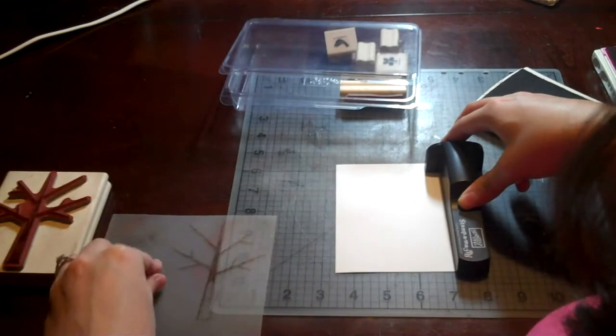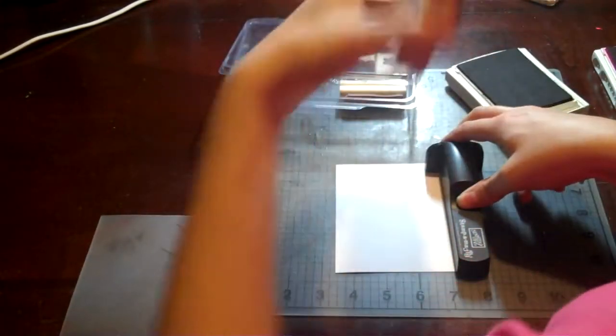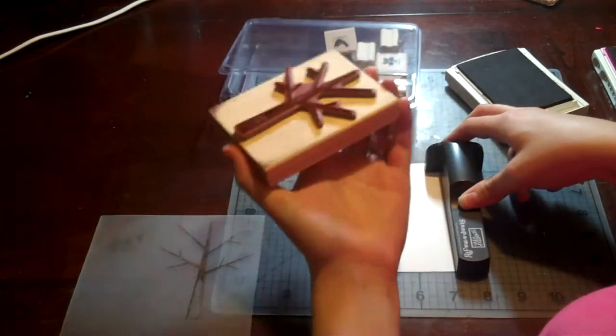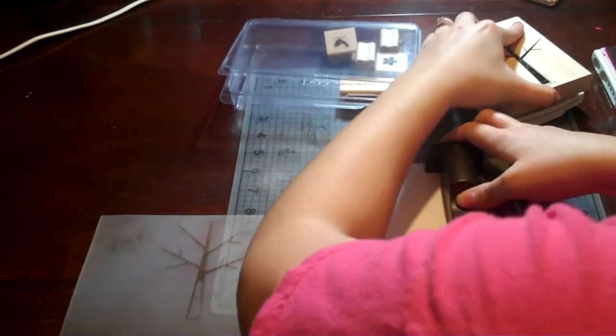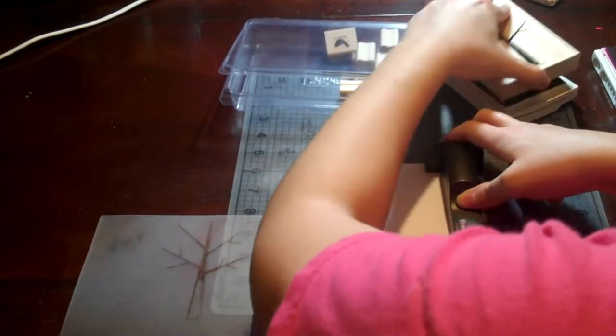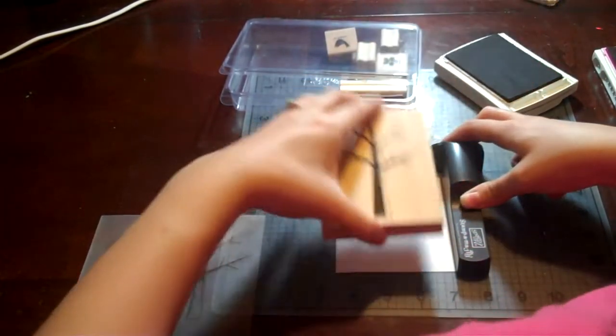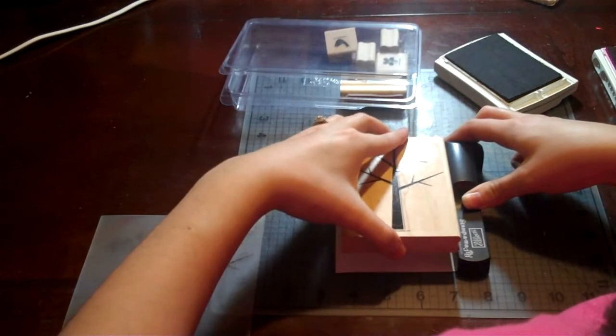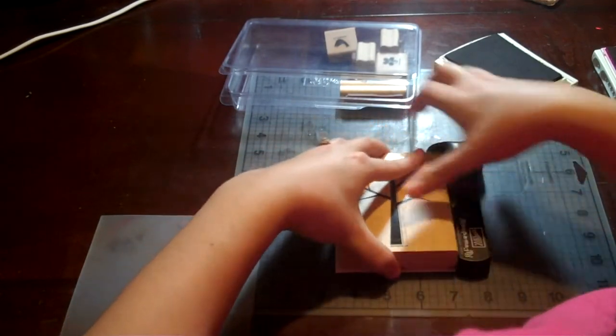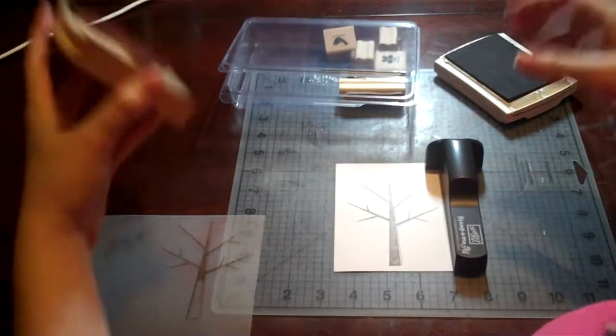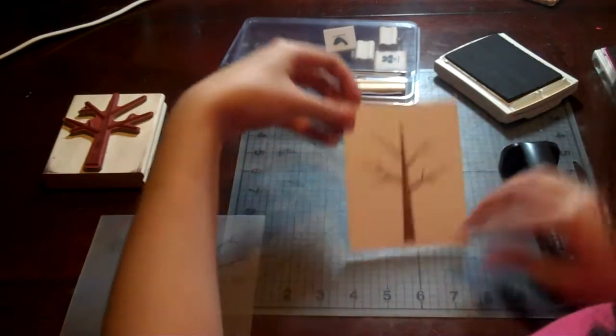Remove the sheet. Now when I stamp straight down, I'll have my image exactly where I want it. Let me ink up my stamp again. I'm going to stick my stamp in that corner and go straight down with it. I got my tree exactly in the middle where I wanted it.